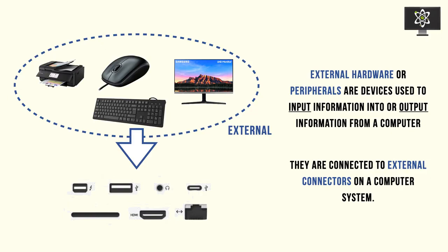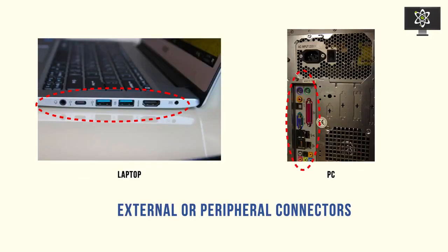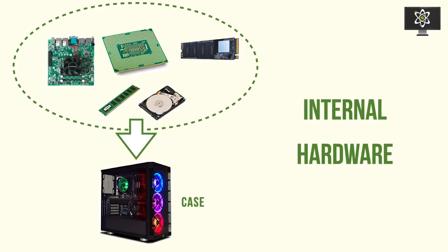External hardware is connected externally to the computer, and the critical point is that you don't need them specifically to operate. You can see these external ports on the side of your laptop or on the front or back of a PC — those are external or peripheral connectors, where connectors are another word for port. In this video, we'll be focusing on internal hardware.